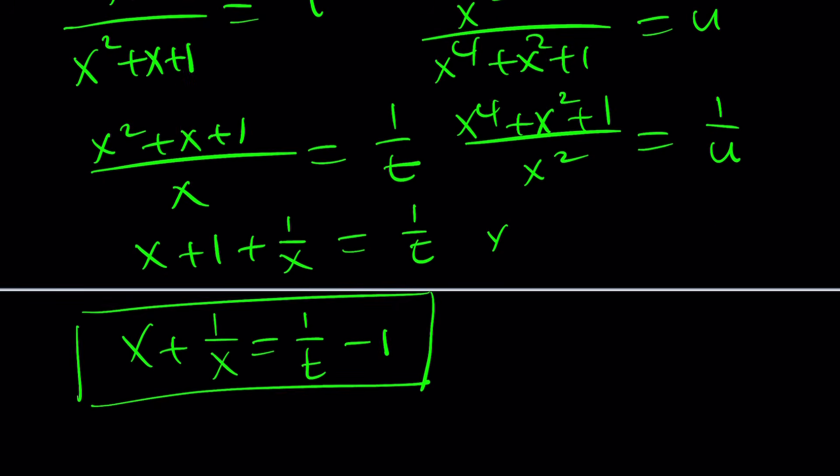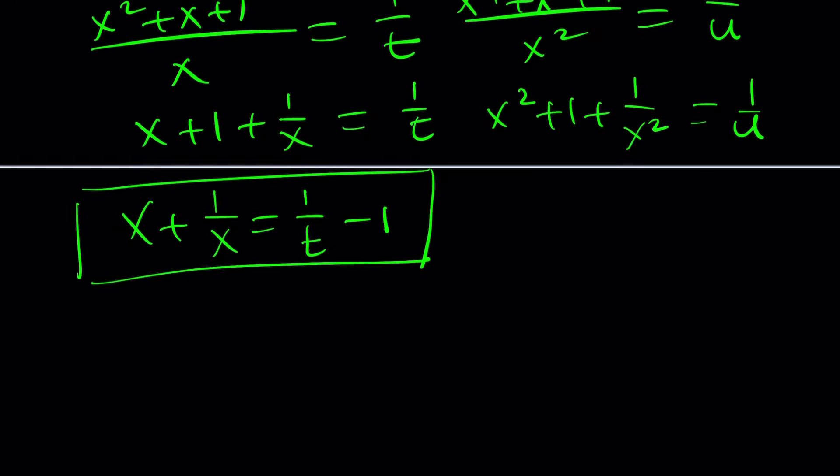This is 1 over u. And when you split it up, it's going to become x squared plus 1 plus 1 over x squared equals 1 over u. And remember, I'm trying to associate these two things, t and u, sort of, right? So here's what I'm going to do. I'm going to go ahead and square both sides here.